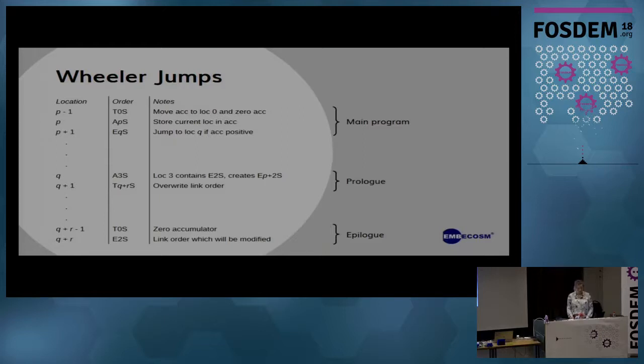David Wheeler, Morris Wilkes' assistant, came up with the technique to allow blocks of code to be reused for multiple locations. The program could store its current location in the accumulator and then jump to the block of code to be reused. The block of code would then add the opcode for a jump to location 2 to the accumulator and store it at the final location of the code. This modified code was then a link order allowing control to return to the original program. You can see the behavior of the main program: at location P minus 1 it zeros the accumulator, at location P it stores its current location in the accumulator, before at location P plus 1 it jumps to the block of code at location Q.